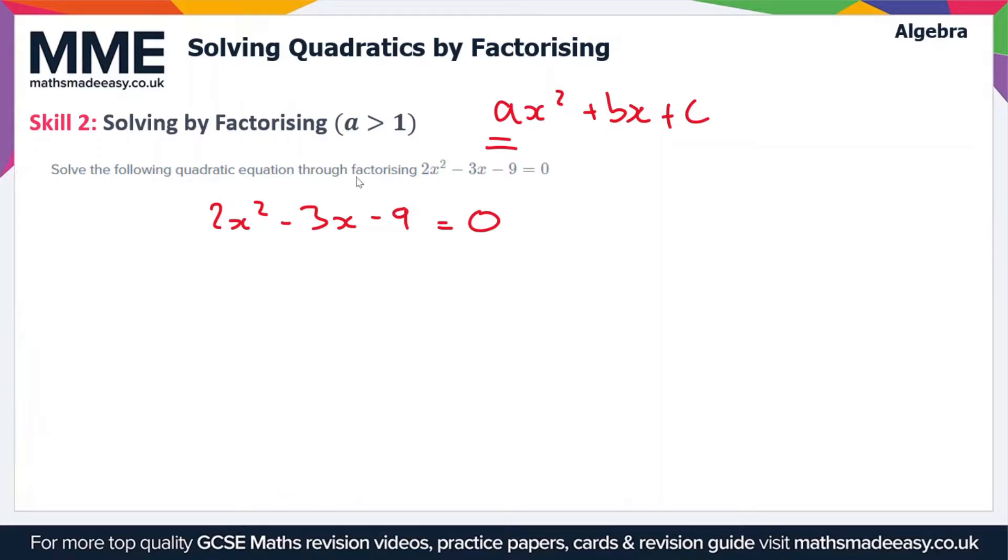So here we're aiming to factorise this expression. First of all, we're going to need a 2x in one bracket and an x in the other bracket. This is the only way that we're going to get a 2x squared term.